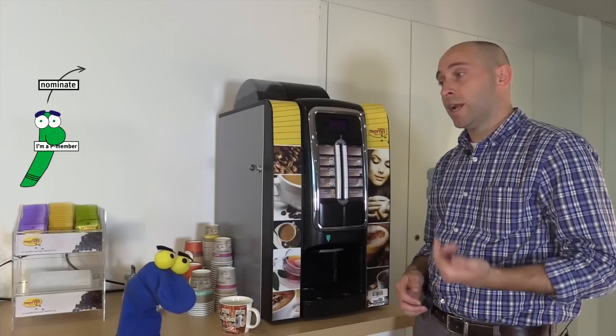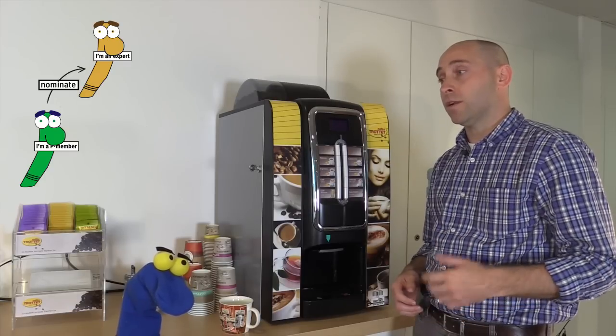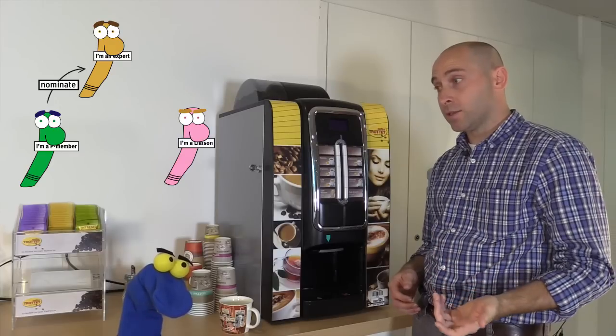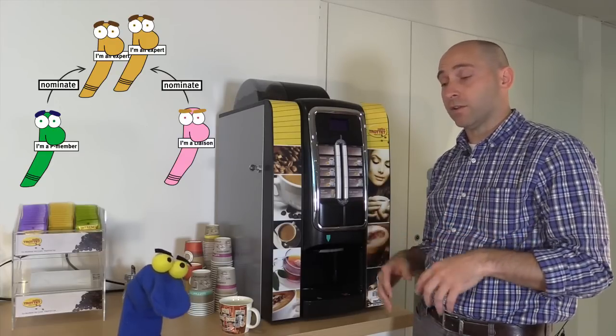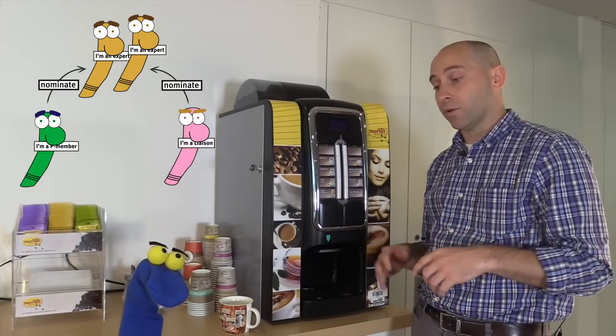Now these P members can nominate experts to write the standard and other organizations who work with us, the liaisons, they can also nominate experts. So all of them then get together to write the draft standard and this takes place in the working group.